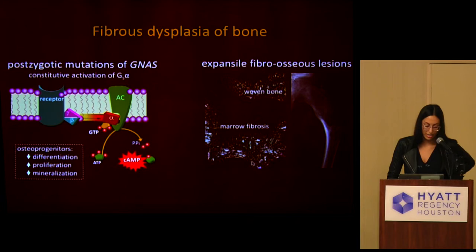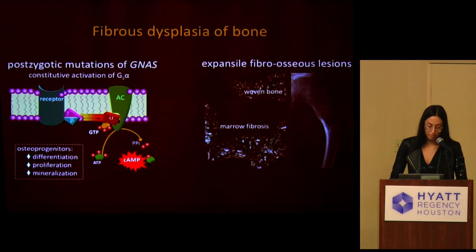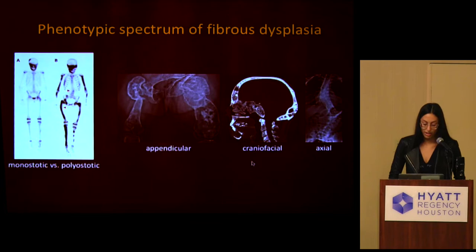In osteoprogenitor cells, this really disrupts differentiation. These abnormal bone marrow stromal cells go on to proliferate and they produce an immature woven bone, and they excrete a fibrotic matrix, resulting in these expansile discrete fibro-osseous lesions.